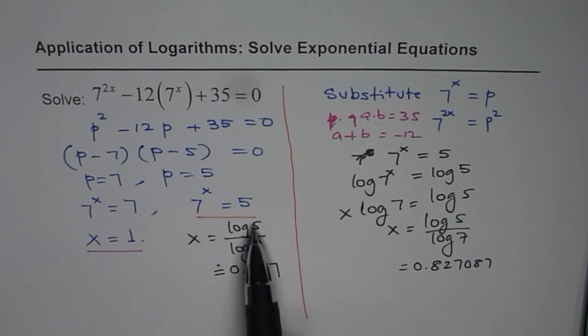So remember log 5 over log 7 is a real number which you could write as your answer. So these are the two solutions for the given exponential equation. I hope that helps. Thank you.